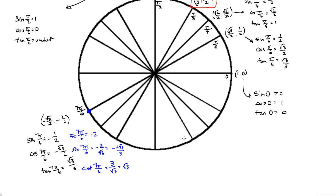Use the coordinates you memorize for the unit circle and then take the reciprocal as needed, rationalizing if necessary. Be very careful with tangents and cotangents. For example, tangent of 0 is 0/1 which equals 0, but cotangent of 0 would be 1/0 which is undefined. If you divide by 0, it's undefined. 0 divided by a number is fine, but 1 divided by 0 is not.